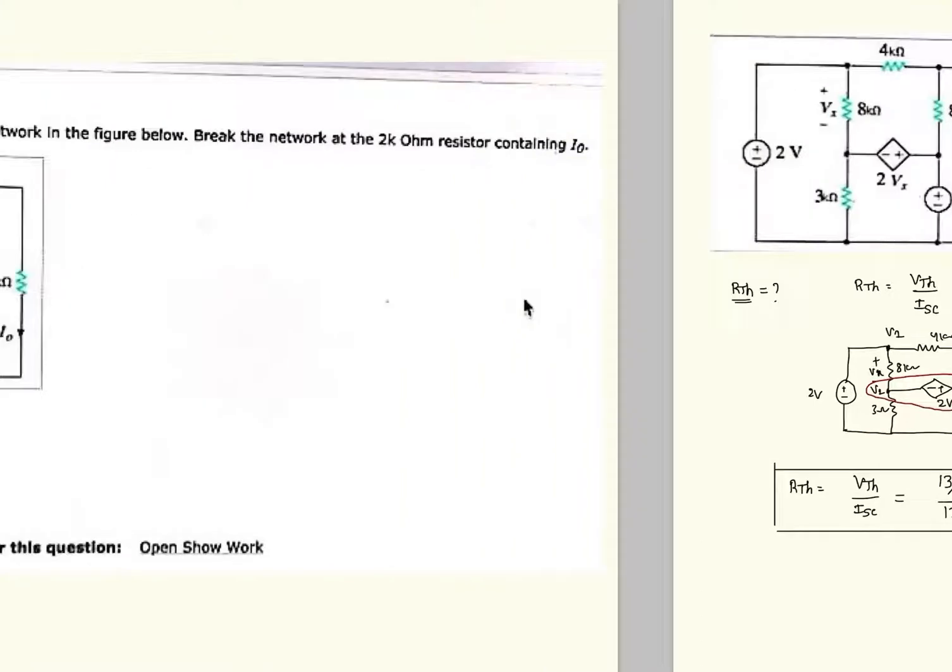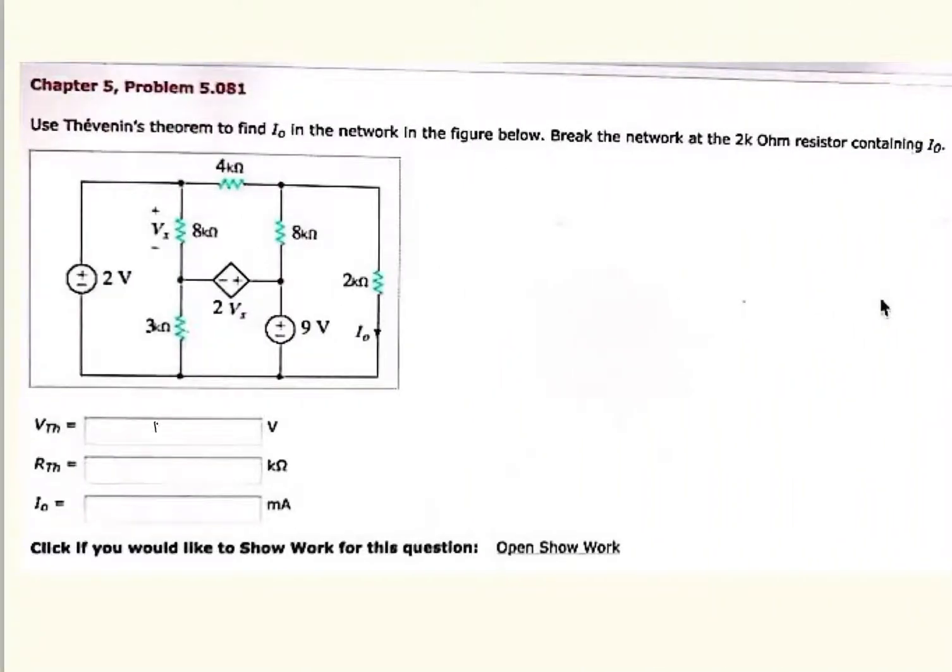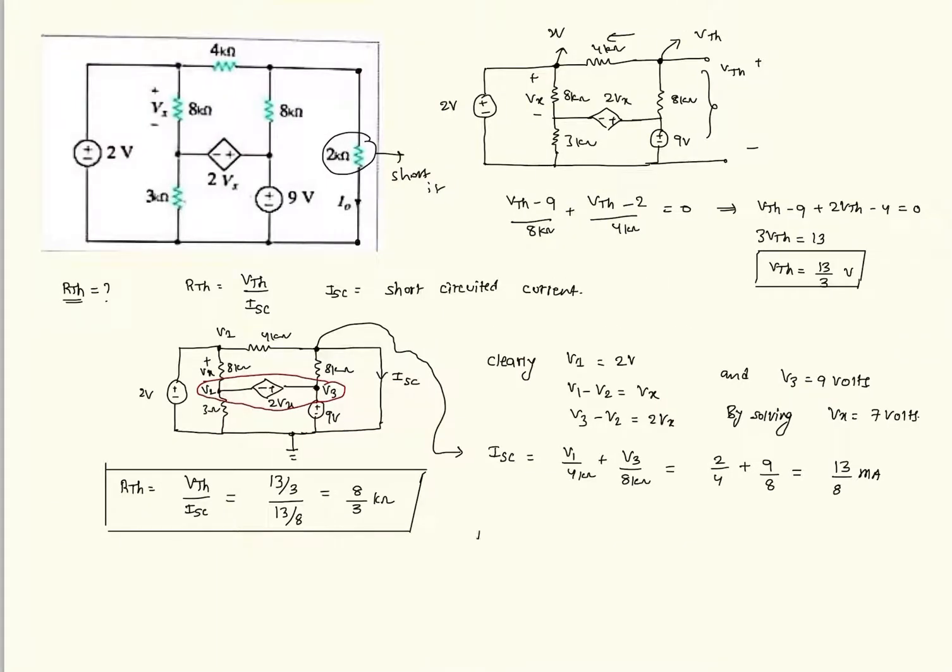Now what is the third thing that is asked of VTH is nothing but 13 by 3. RTH is nothing but 8 by 3. Now we need to calculate I naught. How to calculate I naught? I naught just simply replace the left side part of this circuit with the Thevenin's equivalent.